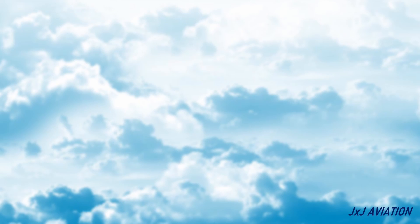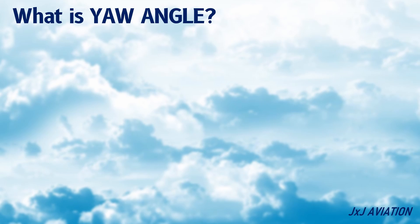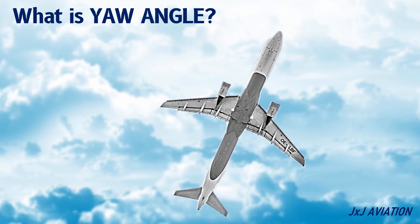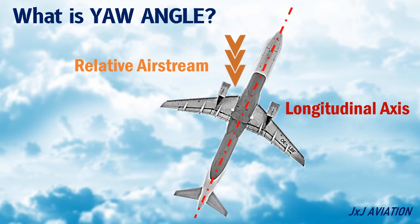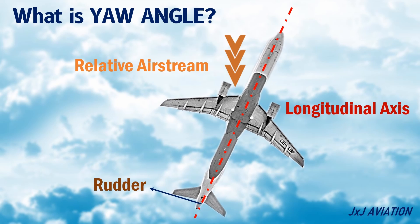What is Yaw Angle? Yaw Angle is defined as the angle between the longitudinal axis and the direction of the relative air stream. The yaw moment is created by the movement of the rudder, which causes the aircraft to turn towards the left or the right.